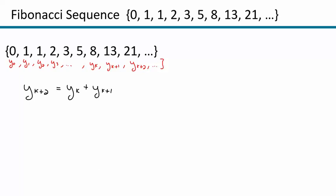Before we proceed, a little note on notation. If I did want to find the 100th term — saying this is the first term, the second term, the third term, the fourth term — the 100th term in my notation would be y sub 99, because the first term is y sub 0 and the second term is y sub 1. Something to keep in mind as we go forward.